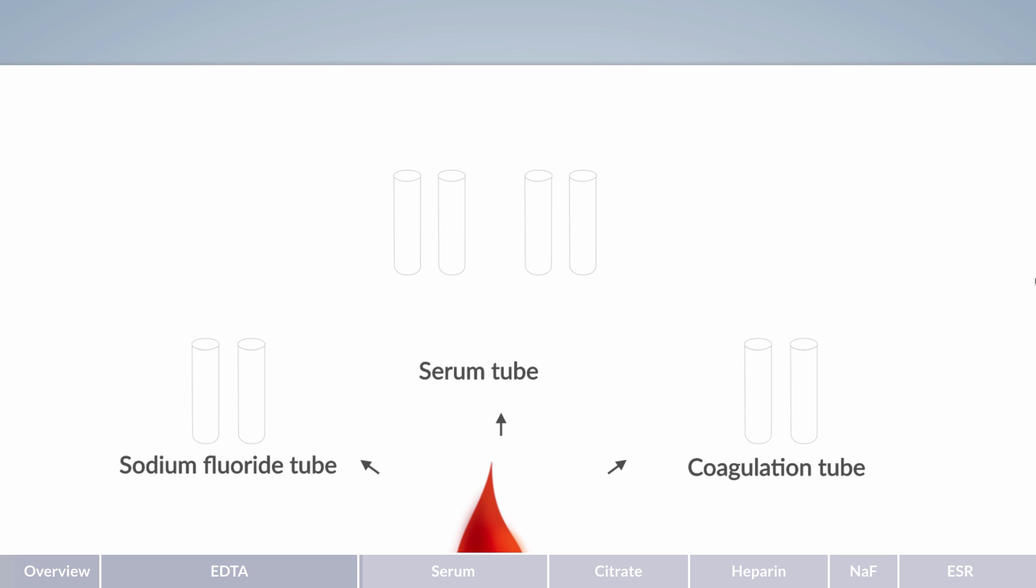A serum collection tube is used if serum is desired for analysis, which is obtained after the blood is allowed to clot. Clinical chemistry analysis of electrolytes, such as calcium, and various liver function tests are usually performed in serum.